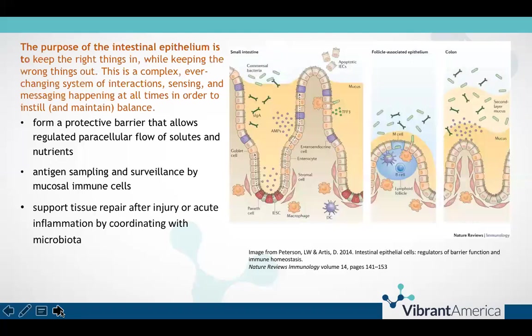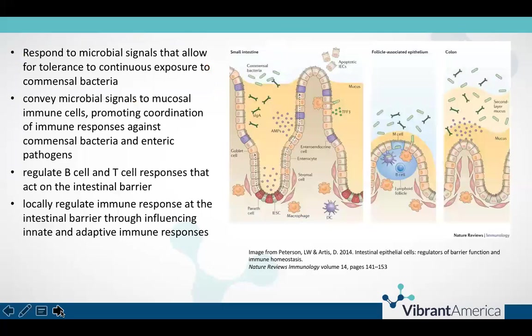Other critical tasks involving the epithelial barrier include responding to microbial signals that allow tolerance as we're continuously exposed to our commensal bacteria — we don't want to mount immune responses against things like Bifidobacterium, for instance. We also want to convey the signals coming from our microbiome back to our mucosal immune cells in order to coordinate immune responses against commensal bacteria that have overgrown or invaded, as well as enteric pathogens such as Clostridium difficile. We also have regulation of B cell and T cell responses occurring here in the epithelium, acting to control, promote, or suppress inflammation depending on what's needed.